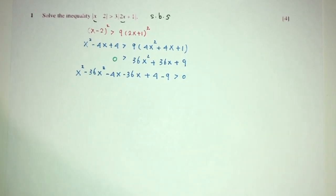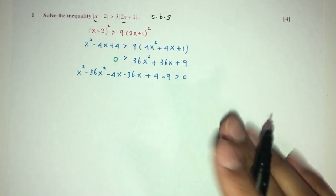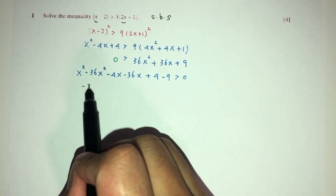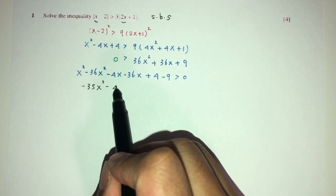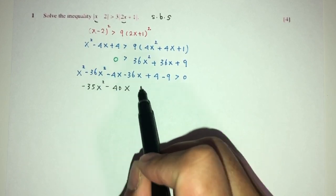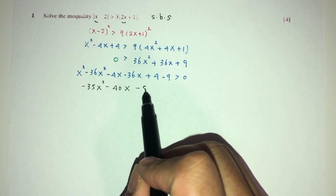Now, we can simplify, obviously. Let's see what happens. So, this will become -35x² - 40x and here we have -5 is more than 0.